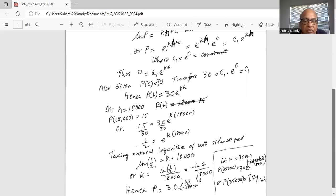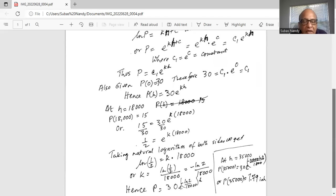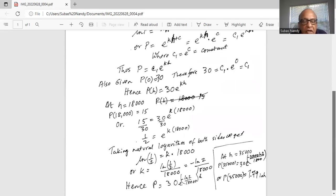k divided by 18,000 on both sides gives k is equal to ln of half divided by 18,000. Now ln of half is ln 1 minus ln 2. ln 1 is 0, so ln of half is basically minus ln 2 divided by 18,000. So that is the value for k.